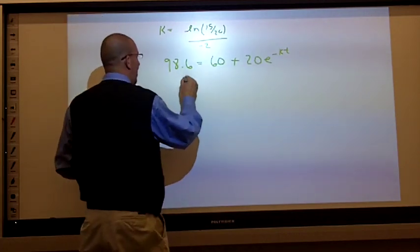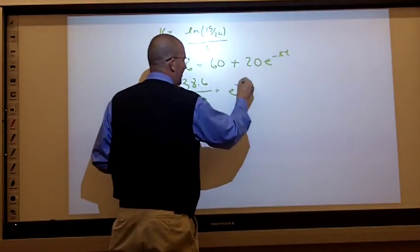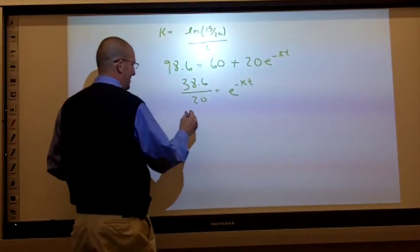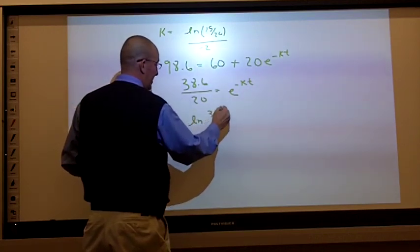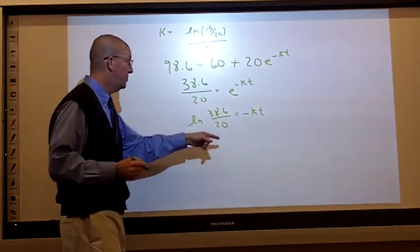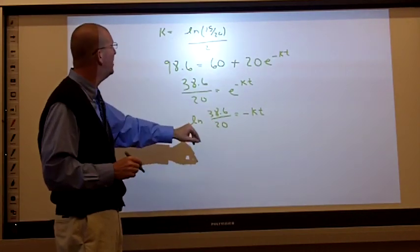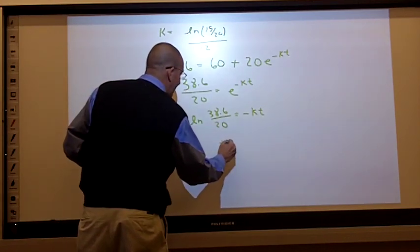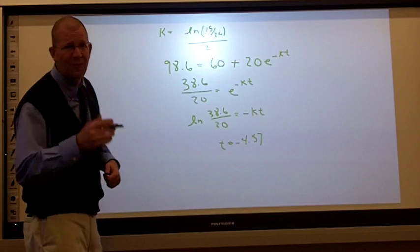Here we go. 38.6 divided by 20 equals E to the negative KT. Any good algebra 2 student will tell you that this is the natural log of 38.6 over 20 equals negative KT. Now remember, K is a number. We know K. So we're going to take our calculator again, plug this in, divide by K, and I'm going to get T is approximately negative 4.57. You can confirm that on your own.